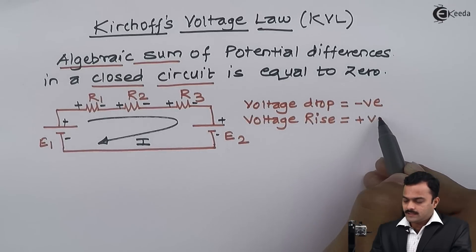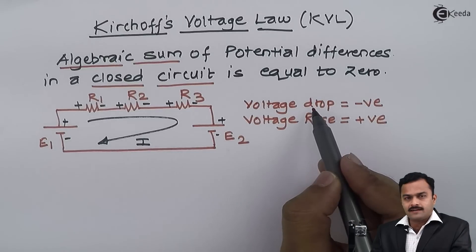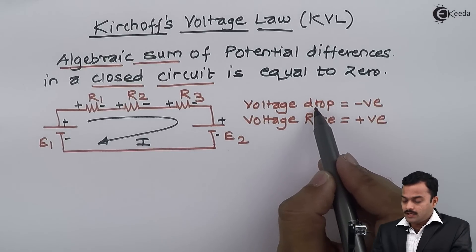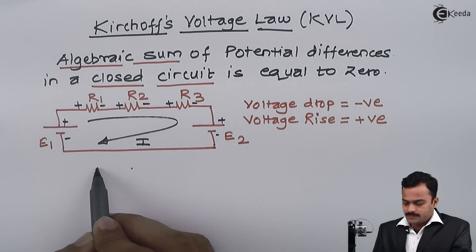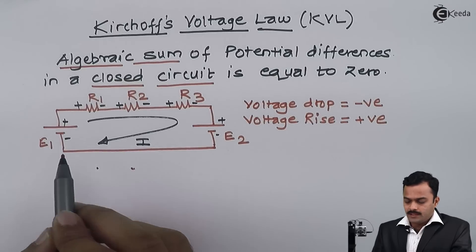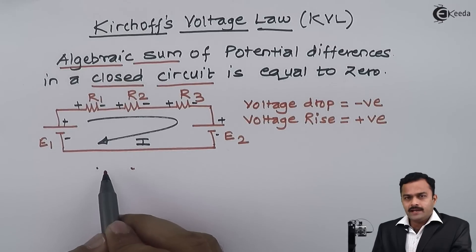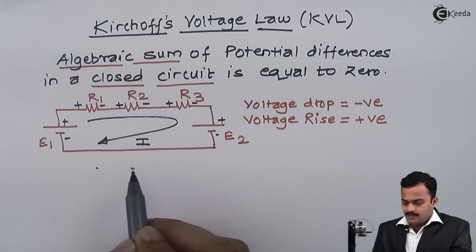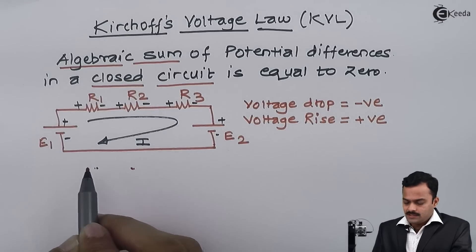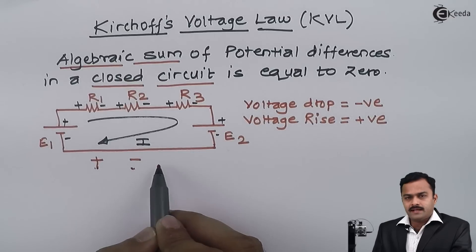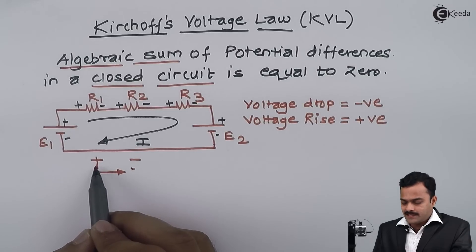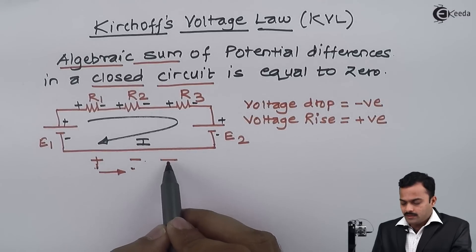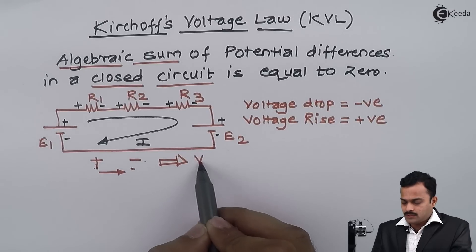Now understand the meaning and difference between voltage drop and voltage rise. Suppose there is one element connected between these two points, it could be anything—a battery or a resistance. If in the direction of current the two terminals have the polarities plus minus in the direction of current, meaning the polarity is changing from plus to minus, I will consider that particular potential as voltage drop.